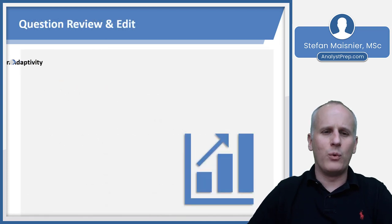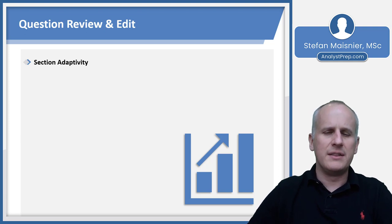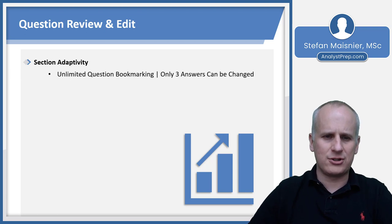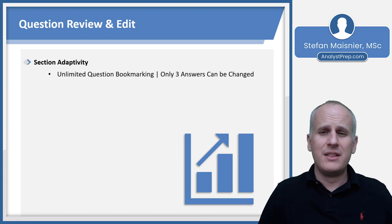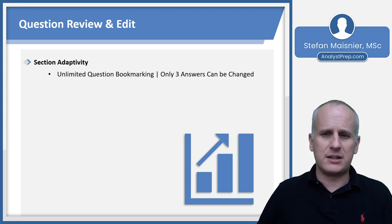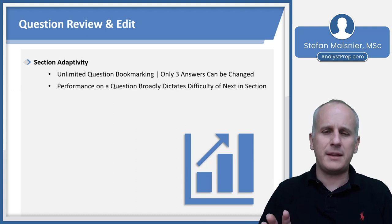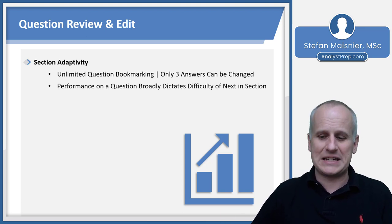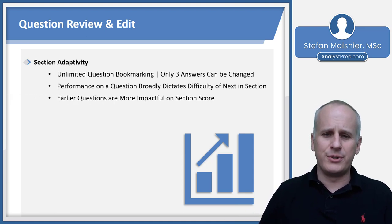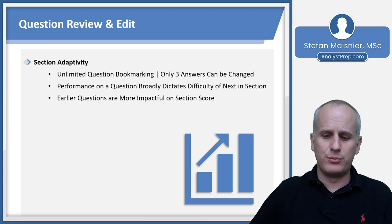One of the new pieces of the GMAT Focus Edition is its question review and edit functionality. The GMAT remains adaptive within the section, but you now have unlimited question bookmarking with only three answers that can be changed. Rather than before, where you had to move forward and couldn't return to a question, the GMAT Focus Edition allows test-takers to return to problems after they've seen them the first time. However, your performance on an individual question will still broadly dictate the difficulty of the next question in that section, and earlier questions are still more impactful on your section score.